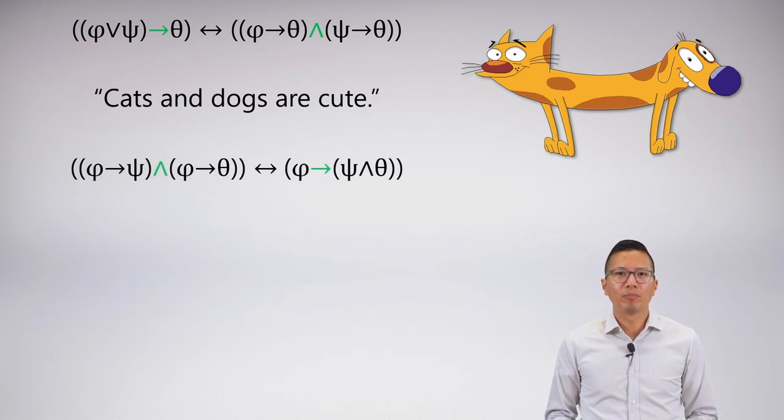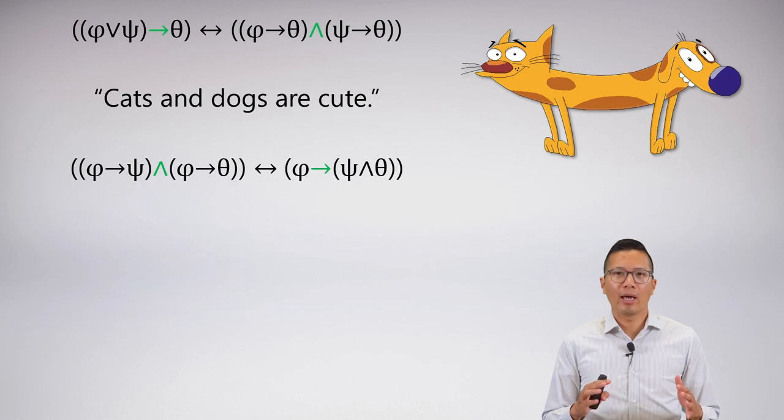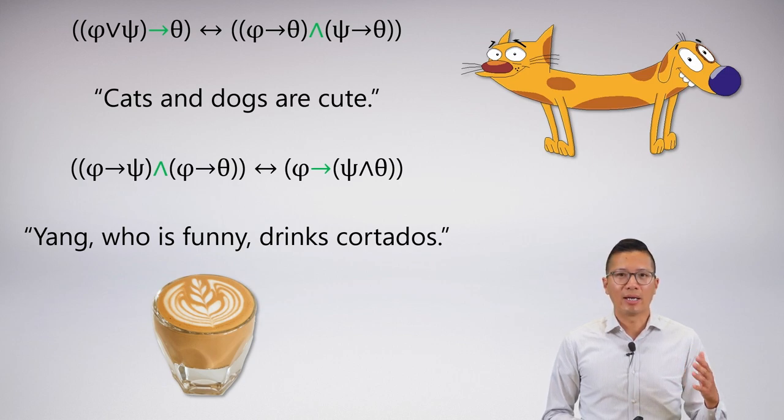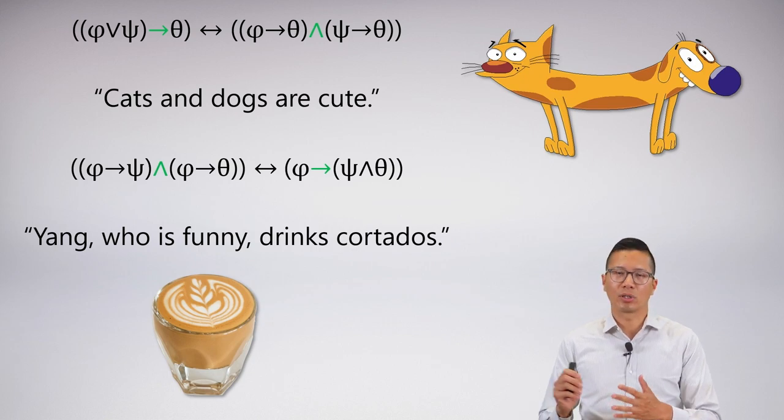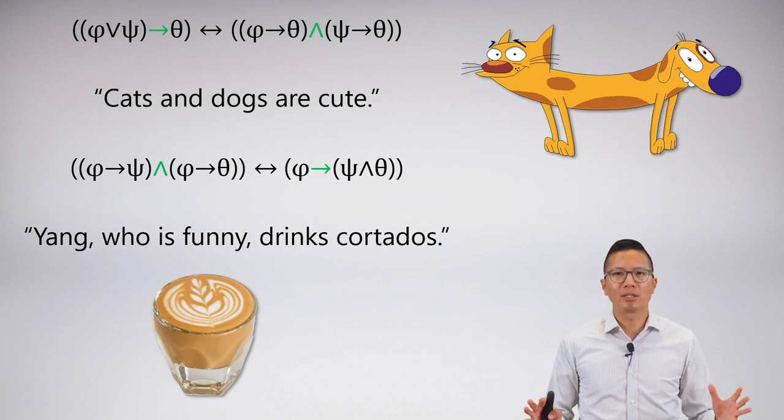Here's another one that we've been looking at, which is phi arrow psi and phi arrow theta, if and only if, or logical equivalence to phi arrow psi and theta. Again, this is the formal way of saying something like this: Yang who is funny drinks cortados. I can say Yang is funny, then I can say Yang drinks cortados, and then I can say Yang is funny and drinks cortados. These don't translate so perfectly because I'm trying to use abstract language and so on, but this is the general idea.